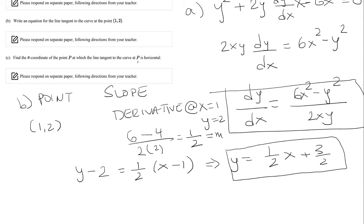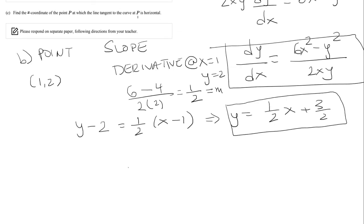Now last one, part c. Find the x-coordinate of the point P at which the tangent to the curve at P is horizontal. So this involves setting the derivative equal to 0.